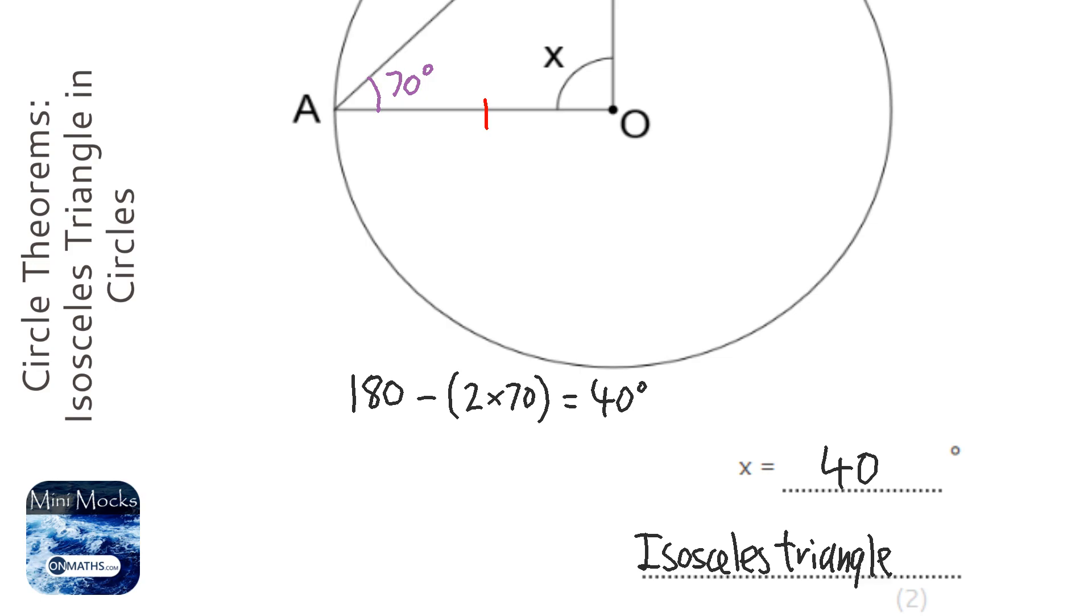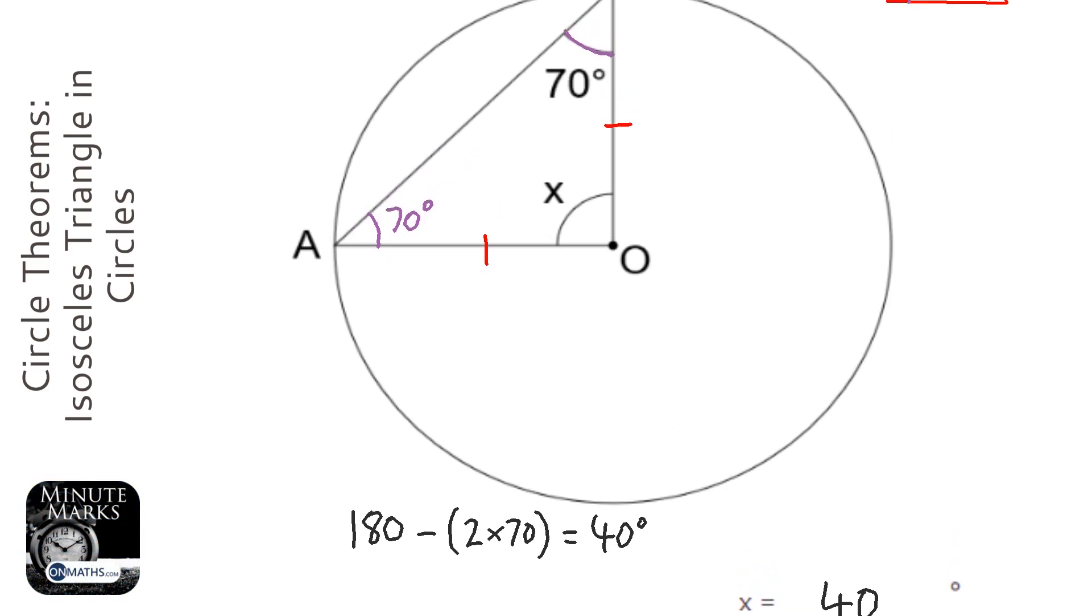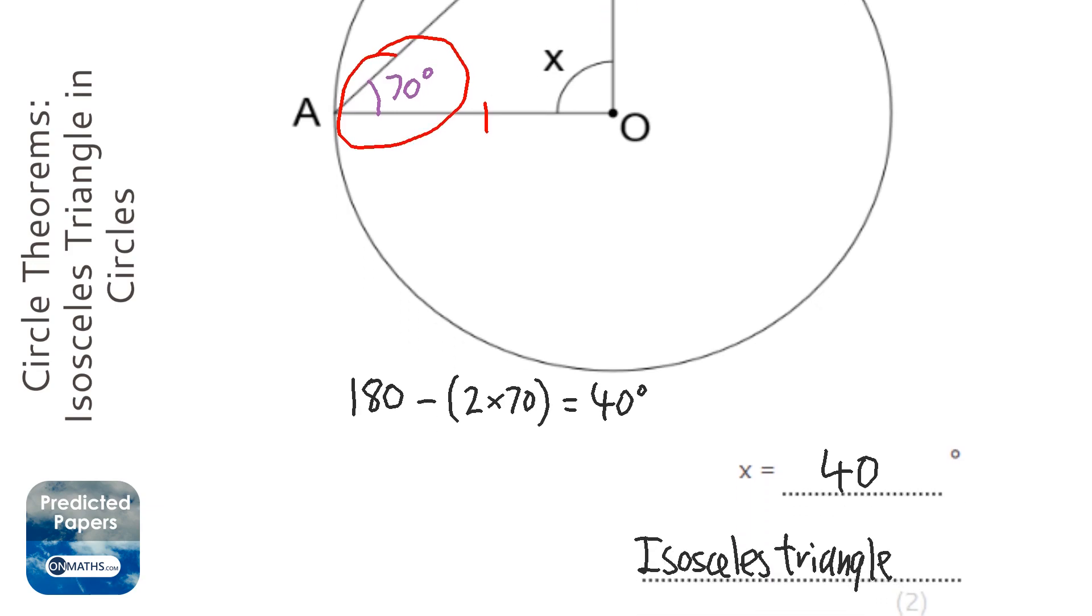Then the person marking it will identify that you realize they were the same. Marking things on the diagram is really helpful as well. When I'm marking these, seeing that written on the diagram, you can actually get credited marks for drawing the angles on the diagram, but you must also have a written explanation as well.